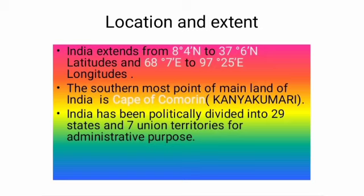India's location and extent. India extends from 8°4' north to 37°6' north latitude and 68°7' east to 97°25' east longitude. Hence, India is located in the north-eastern hemisphere. The southernmost point of the country is Pygmalion Point or Indira Point, located in the Andaman and Nicobar Islands.